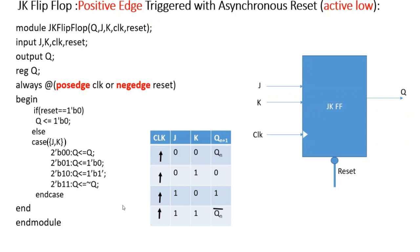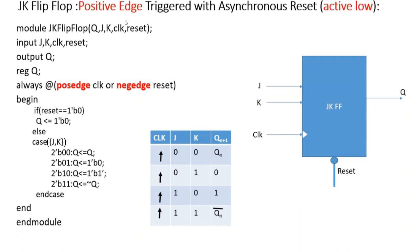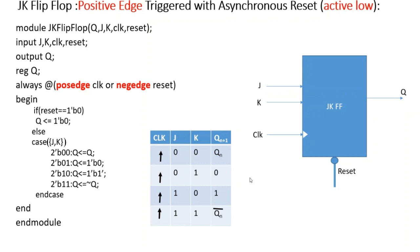Now let us see how we can write the design module for different configurations of a JK flip-flop. If you have to design a JK flip-flop which is negative edge triggered, just replace posedge with negedge. If the reset signal becomes synchronous, remove it from the sensitivity list. If the reset signal becomes active high, change the condition to reset == 1'b1. With these minor modifications you can design a JK flip-flop of any given configuration.